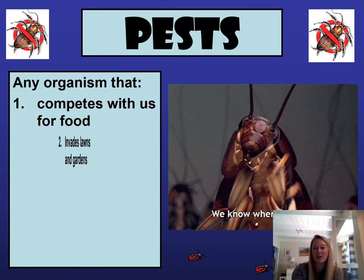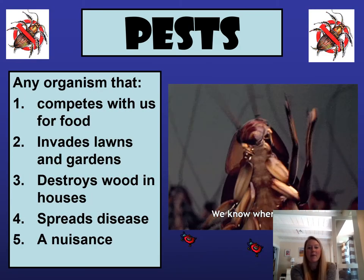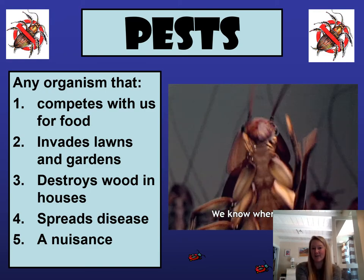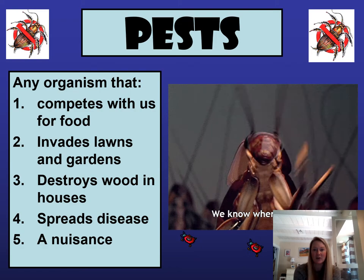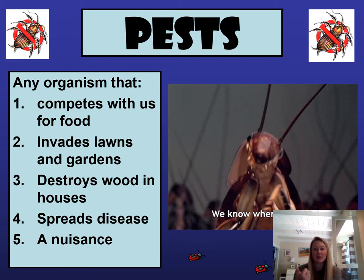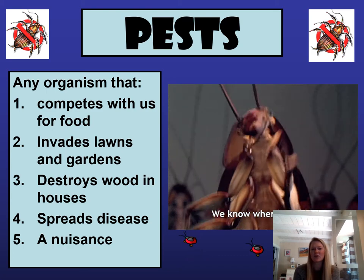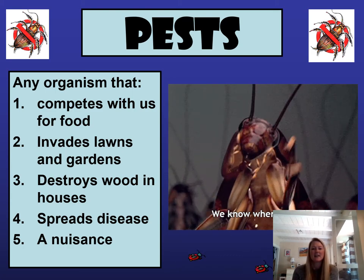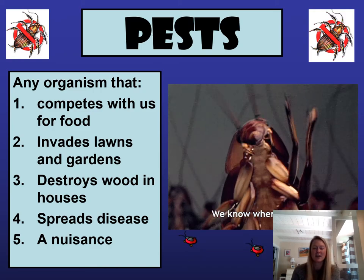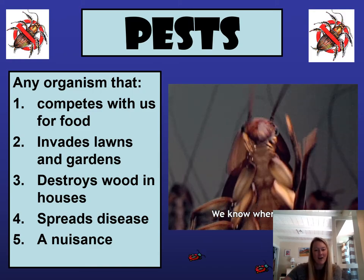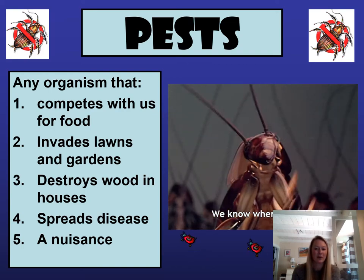First, we should probably start off with what is a pest. So a pest is usually an organism that is not wanted. It could fit a variety of these categories: it competes with us for food, it invades our lawns and gardens, it destroys wood and houses, it could spread disease like mosquitoes, and it's just a general nuisance. So what humans have created are pesticides that are used to control those organisms.